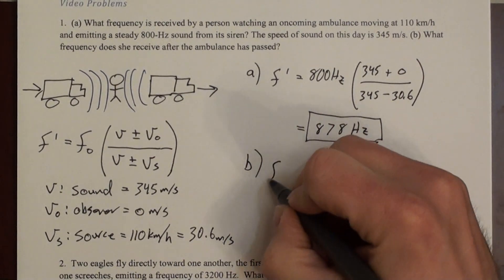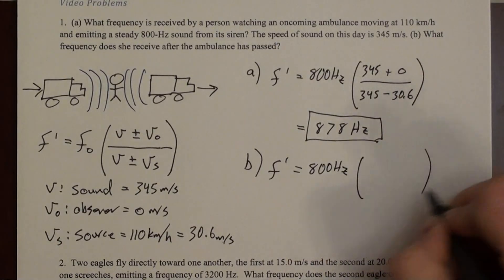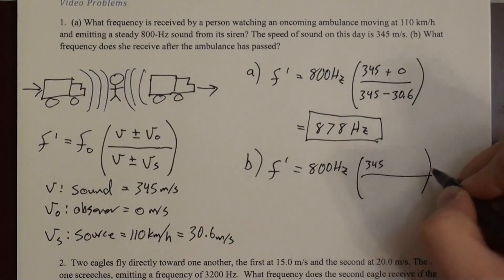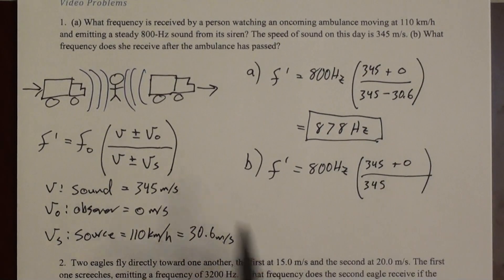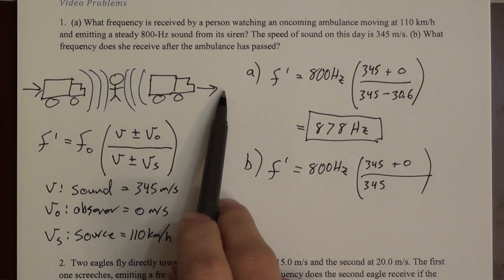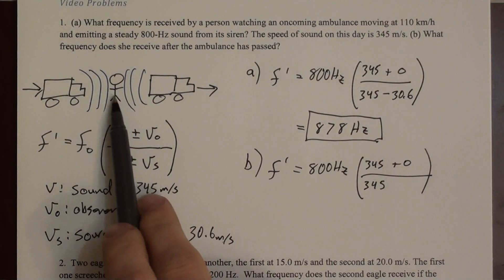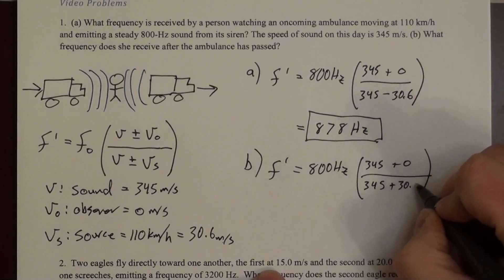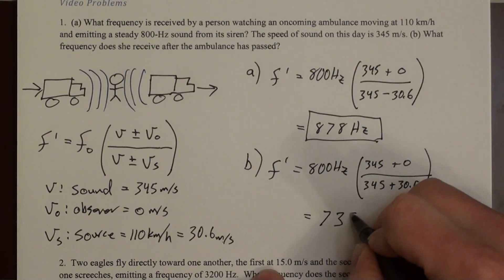And for the second problem, it should be pretty straightforward. 800 hertz. The observer is still not moving. So it's 345 plus zero. And in the denominator, it's 345. Now, the ambulance is moving away. So these wave fronts are actually further apart than they would have been, or they're reaching the observer less frequently. So it should make this frequency smaller or make the denominator bigger. 30.6. And if you do that math, you end up with 735 hertz.